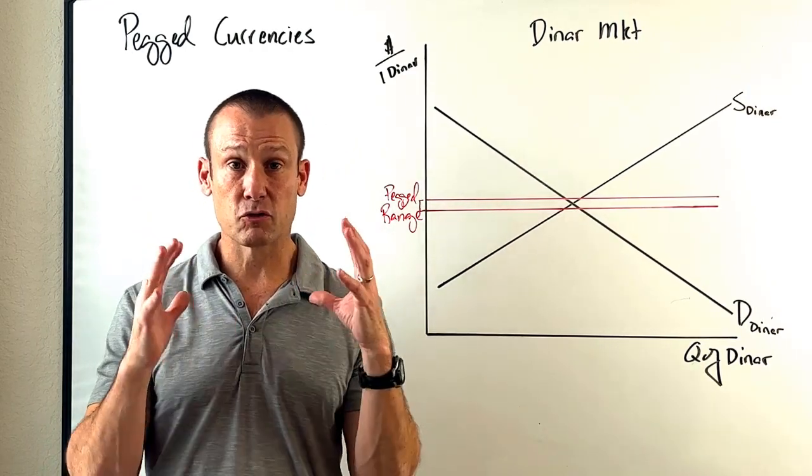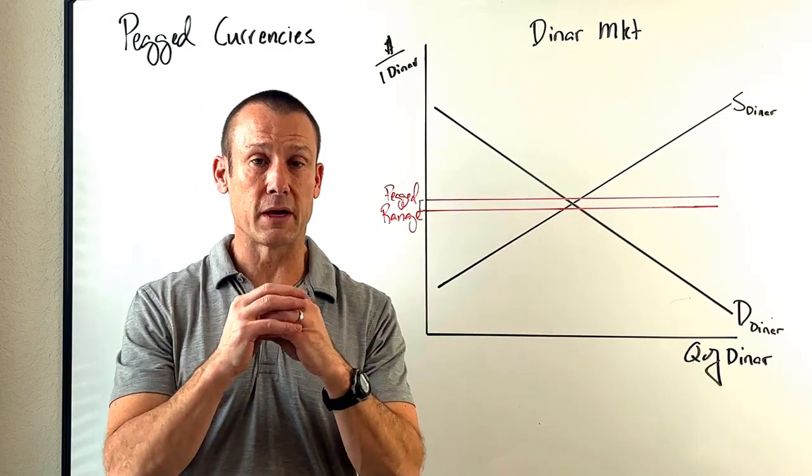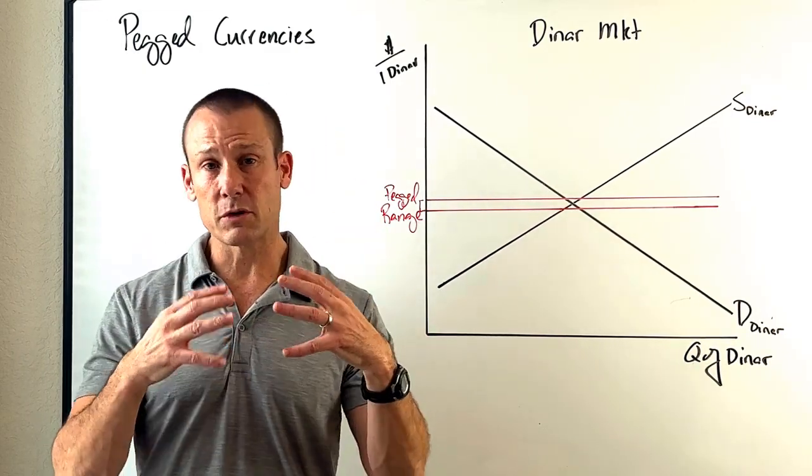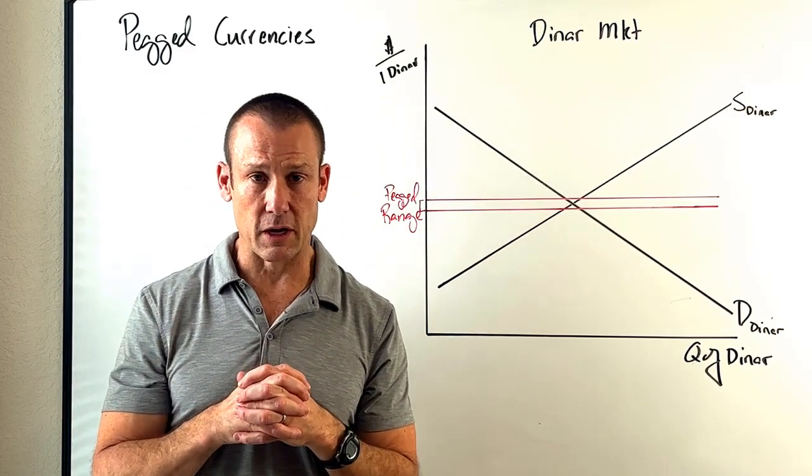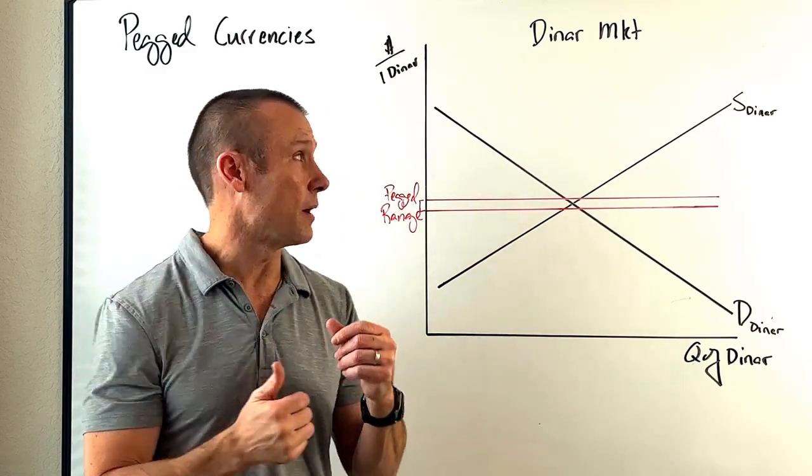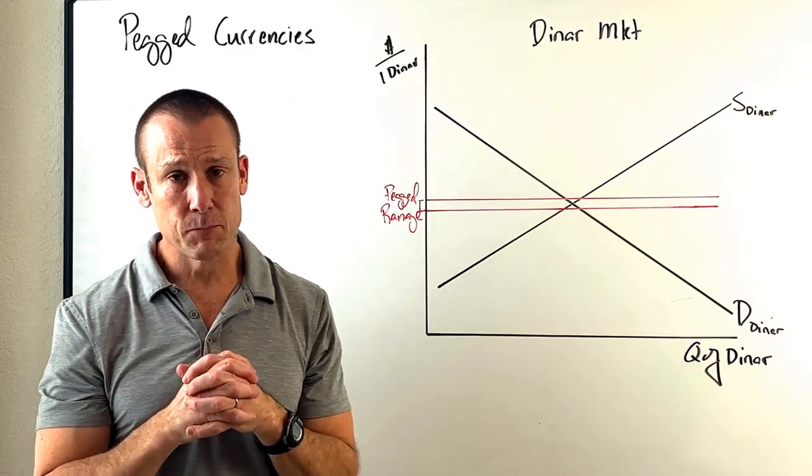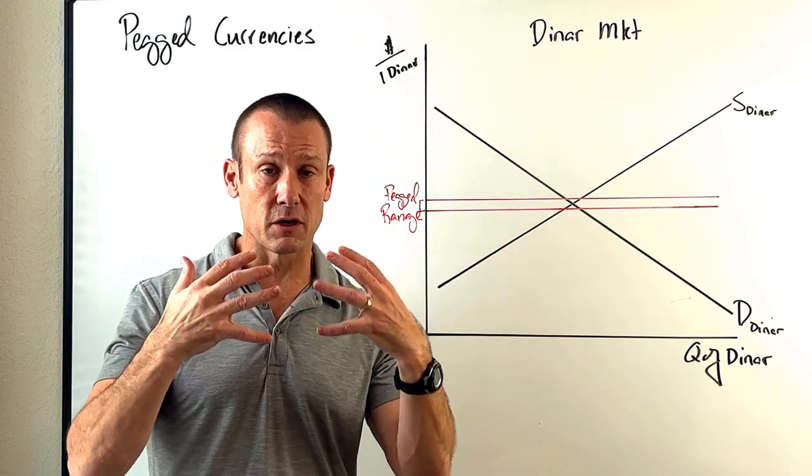But developing countries, smaller countries, do peg to certain currencies, usually the US dollar or the euro or some market basket of currencies. I'm just going to keep it simple and talk about the Jordan dinar, which is pegged to the US dollar. Now, why would a country, a developing country, do this?